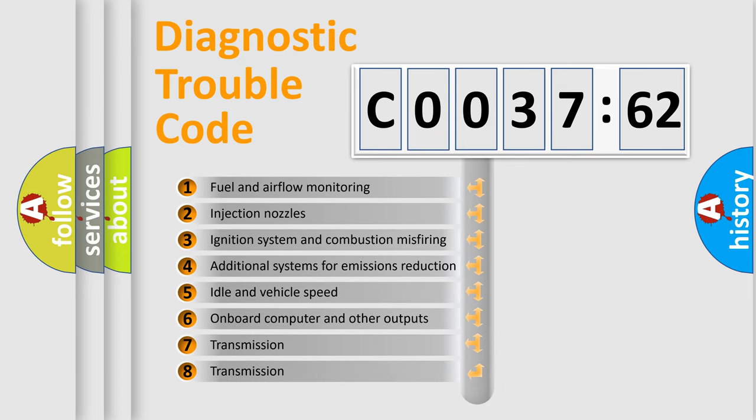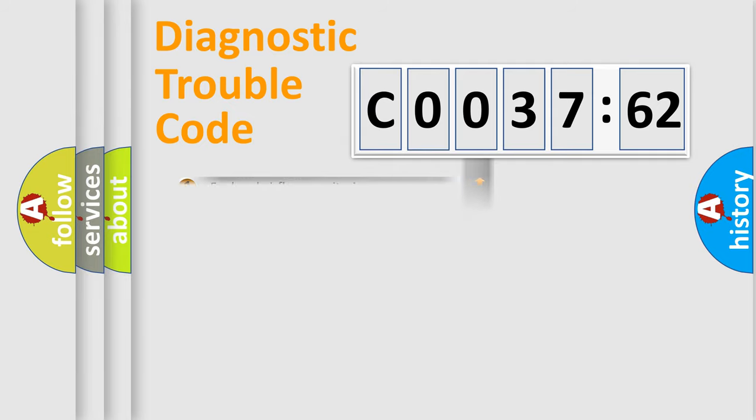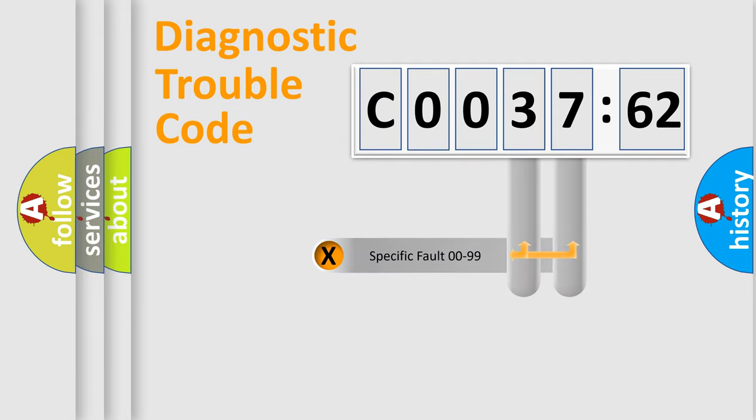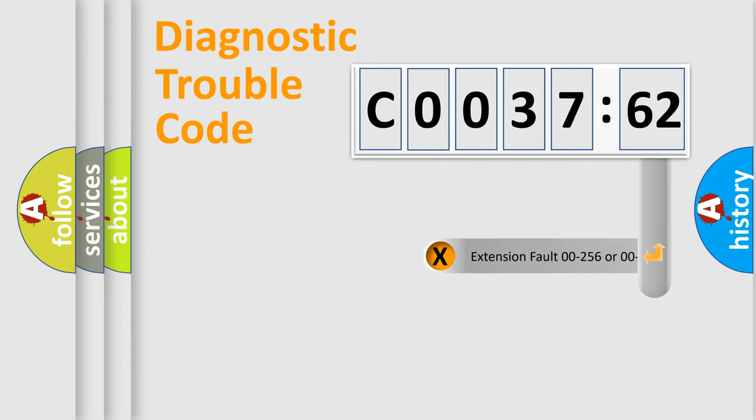The third character specifies a subset of errors. The distribution shown is valid only for the standardized DTC code. Only the last two characters define the specific fault of the group. The add-on to the error code serves to specify the status in more detail.